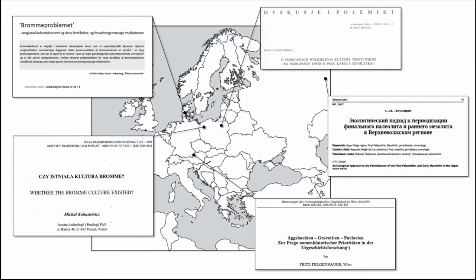One can also include lost-in-translation issues where debates have been raised in a small journal in a certain country, and the Anglophone audience — which is the most common audience for these debates — just doesn't interact with that evidence. This is particularly so for the Upper and Final Paleolithic. More recent work has highlighted how units are created on different means: specific artifact shape, amount of raw materials used, or types of different tools.